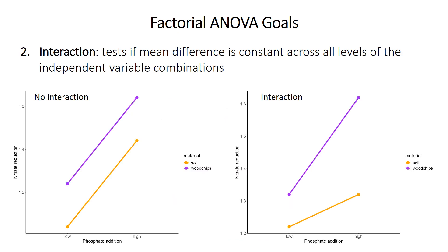The second thing assessed is whether there is a significant interaction between the factors — whether the mean difference is constant across all levels of the independent variables. The graph on the left shows no interaction: the shift from low to high phosphate causes the same change in nitrate regardless of material. However, the graph on the right shows an interaction: the effect of phosphate is much larger in wood chips than in soil, and the effect of switching to wood chips is much larger when phosphate is high.